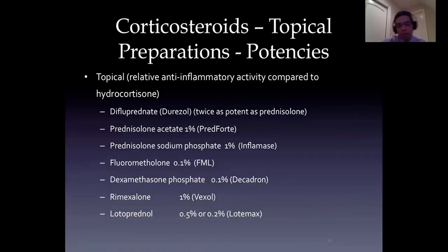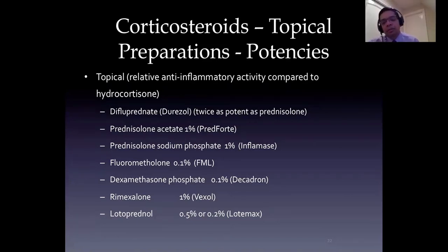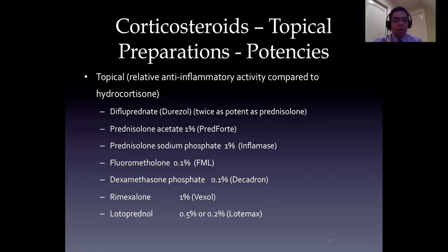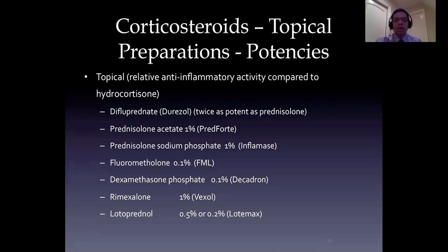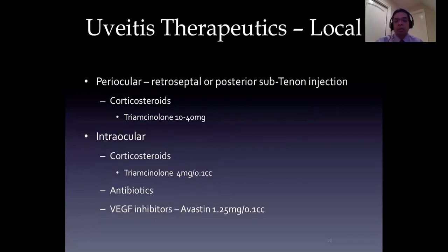The most common agents used in practice are difluprednase and prednisolone. I also use FML (fluorometholone) because it is a very potent steroid available at very low concentrations, almost as effective as prednisolone acetate, but tends to be more friendly in terms of intraocular pressure elevation - it does not cause as much IOP elevation as difluprednate, and probably less than prednisolone as well. I don't use topical dexamethasone very much. Loteprednol (Lotemax) may have some role in the mildest of disease when trying to taper the patient off topical corticosteroids.